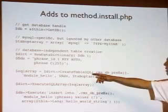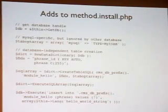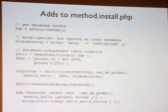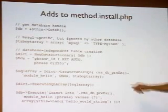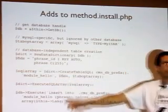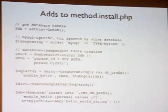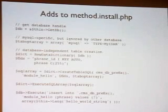So we create our table using this. Now, when you install the CMS, you get to choose the prefix for your database. As a module designer, you don't want to make the assumption that it's the default CMS underscore — most people leave it as the default, but you can't assume that. So this function returns what that prefix is, and then you concatenate the name of your table onto it. It's helpful to have your module name as part of your table name so that other modules don't clash.